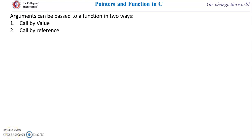In this video lecture I will explain pointers and functions. Arguments can be passed to a function in two ways: call by value and call by reference. In call by value, only the value of arguments are sent to the function, while in call by reference, the address of arguments are sent to a function. In call by value, any changes made to the formal parameter do not change the actual parameter, and in call by reference, any changes made to the formal parameter change the actual parameter. So in call by value we create a copy of the actual parameter, whereas in call by reference we pass the address of the actual parameter.